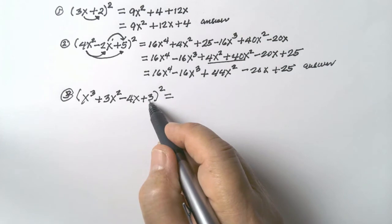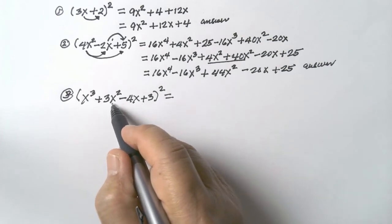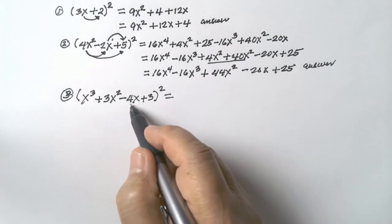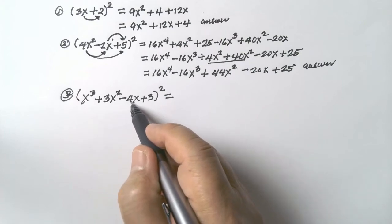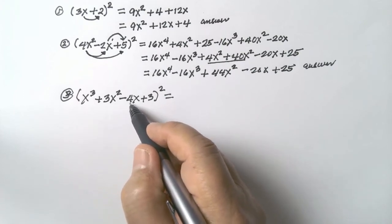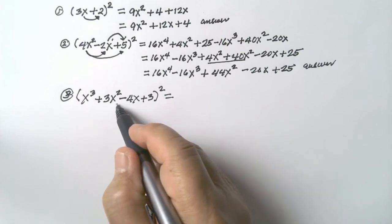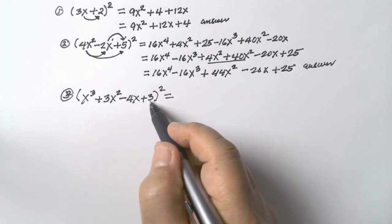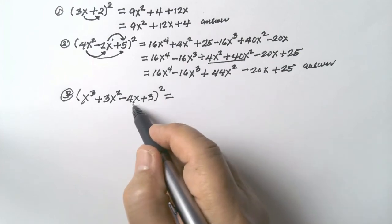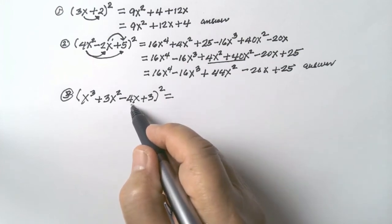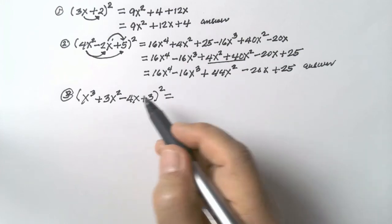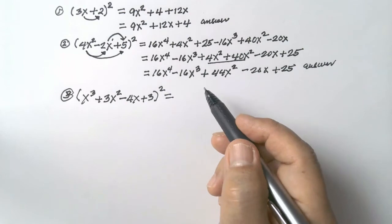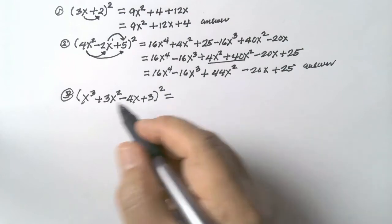Multiply the first term by the fourth and then multiply the result by 2. Then go to the second term: distribute it to negative 4x, then times 2; then to 3, times 2; and then negative 4x to 3, then times 2. Let's do that.